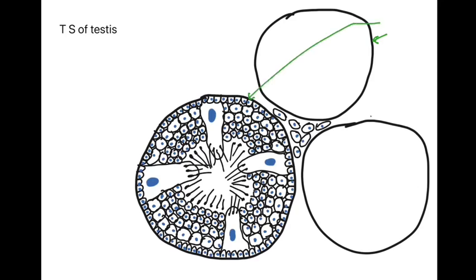These three tubes that we can see here are the seminiferous tubules. The seminiferous tubules are responsible for production of sperms. In the lumen of the seminiferous tubules, the sperms that are produced then pass through the rete testis and outside the testis into the epididymis through vasa efferentia.